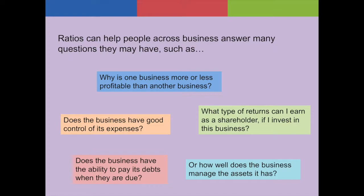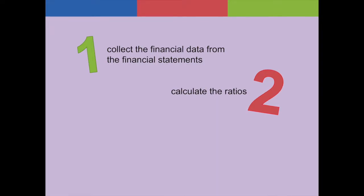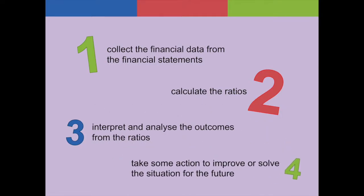Ratio analysis can help in answering and solving all these questions. There are normally four main stages with the ratio analysis. First, you collect the financial data from the financial statements, then you calculate the ratios. Once these have been calculated, you then interpret and analyze the outcomes from the ratios, and finally take some action based on the analysis to improve or solve the situation for future periods.